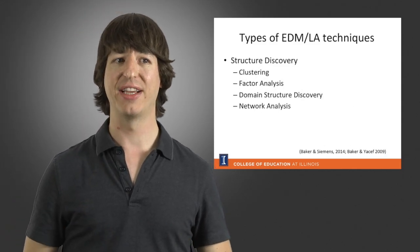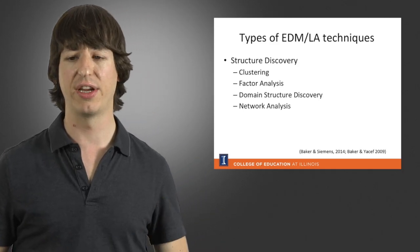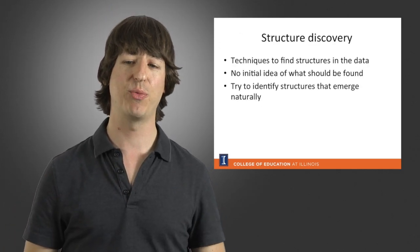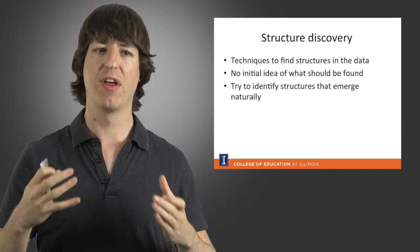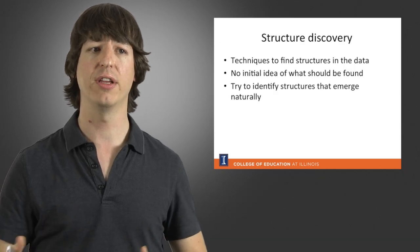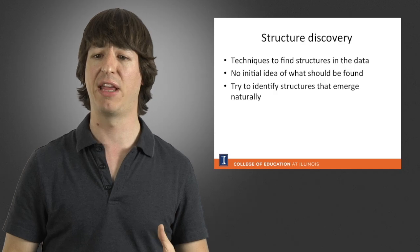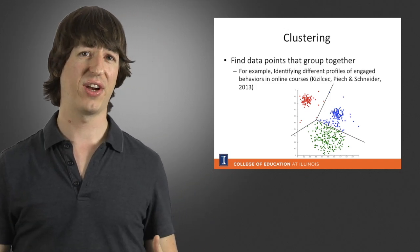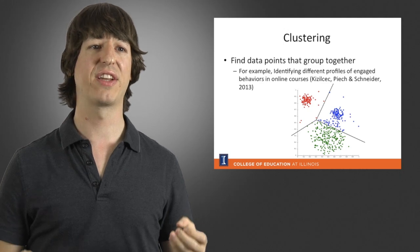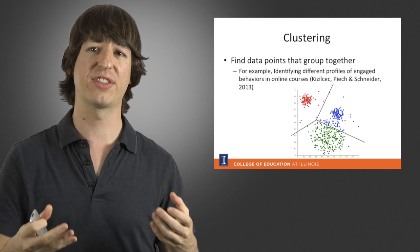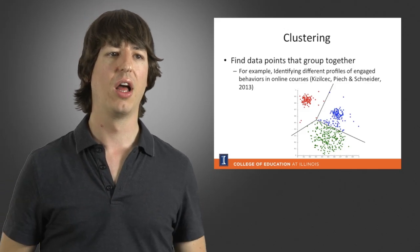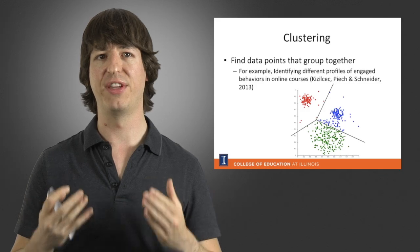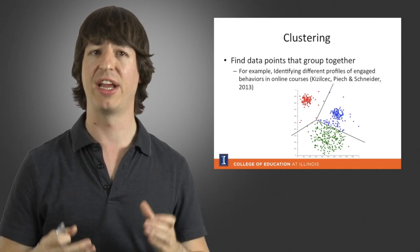Another type of analysis is structure discovery, which includes algorithms such as clustering, factor analysis, domain structure discovery, and network analysis. Unlike predictive modeling, when we're doing structure discovery we don't know exactly what the model is going to give us — the algorithms try to pick up on structures that emerge naturally from the data. One approach is clustering, which groups data points such as students that are similar to each other. A classical example is using clustering to define major profiles of engaged behavior in online courses.